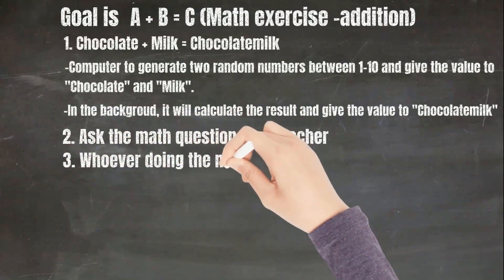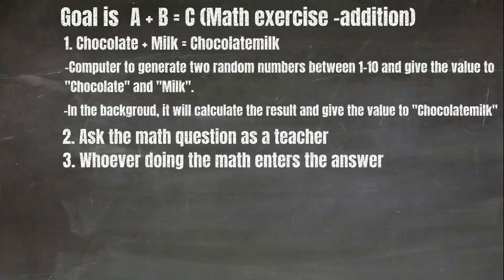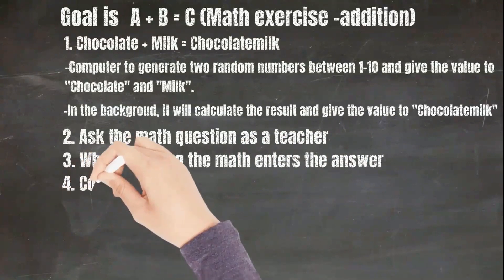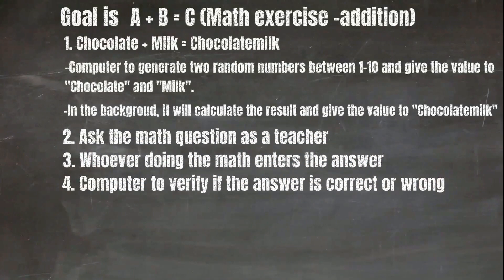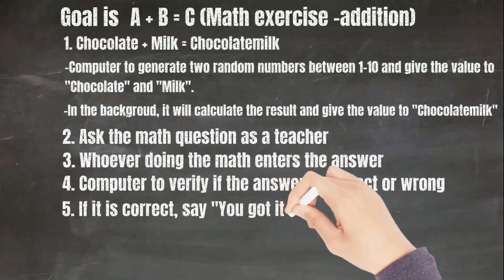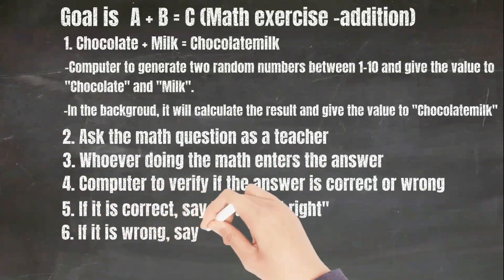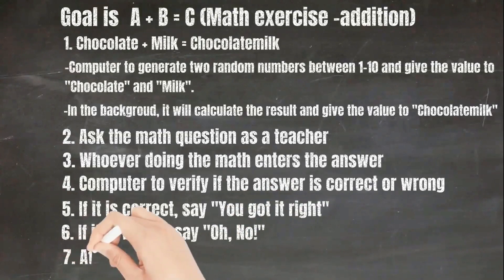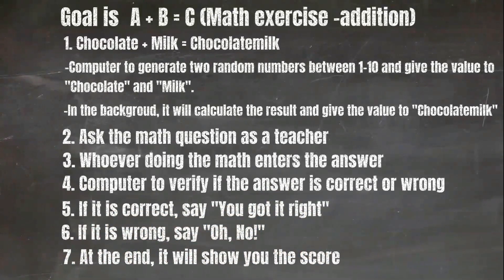Whoever is doing the math will enter the answer. The computer will verify the answer — if it's correct, it will say you got it right. If it is wrong, it will say oh no. At the end, it will show you the score. Don't worry if you don't know these steps one by one, because I'll teach you through them and I'll do that now.